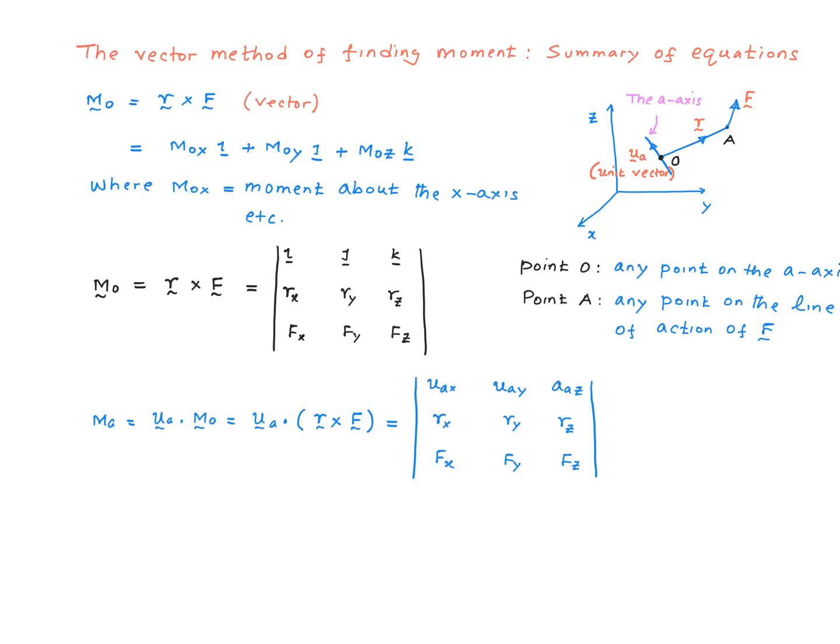MA is simply UA · M₀, where UA is a unit vector along that axis. To evaluate this dot product, we can either first find M₀ in its component form like this and then find the dot product between the two, or we can use this simplified direct expression for the dot product between UA and M₀.